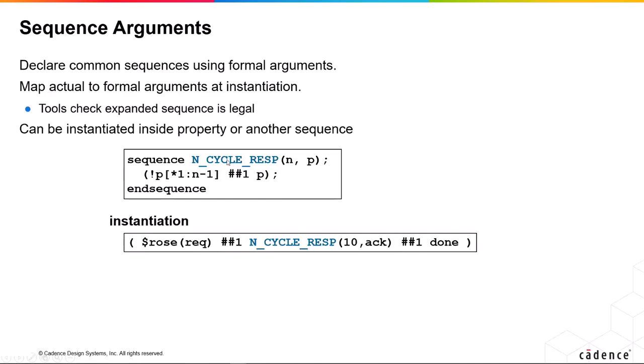And in order to use that sequence, what we have to do is give it its name, of course, but being as it's got arguments, we have to pass arguments to it. So in this case, 10 will map to N and ACK will map to P.